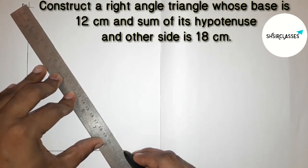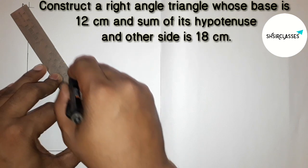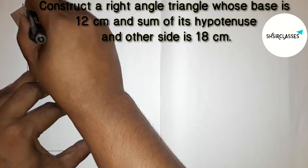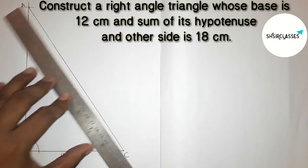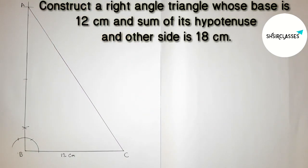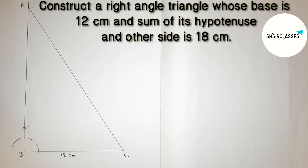Joining the line and drawing line AC. This is the hypotenuse of right angle triangle ABC. Now we have to bisect the line AC with the help of compass.